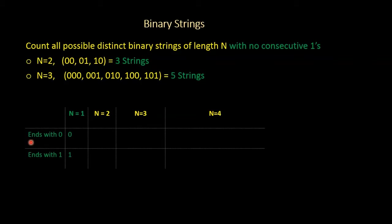Let's start with n equal to 1. For n equal to 1, you can have only two strings — obviously 0 and 1.